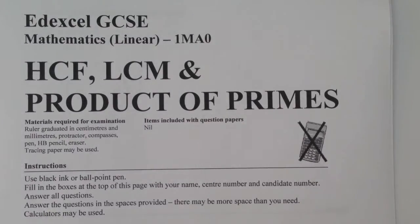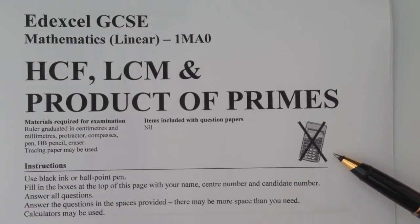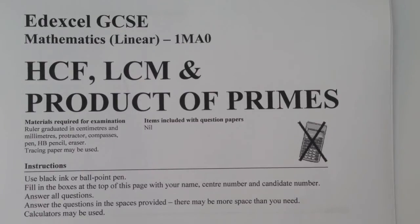In this video we're going to be looking at the answer sheet for highest common factor, lowest common multiple, and products of primes. This is a non-calculator paper. I'm going to be using the factor tree method throughout most of these, and if you're a little unsure about that, please do have a look at the YouTube videos for more information.